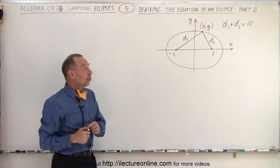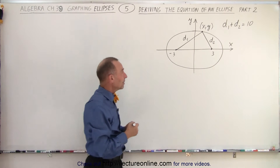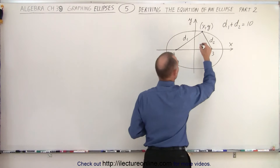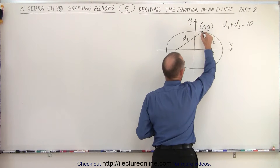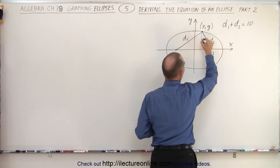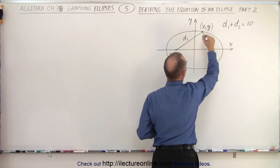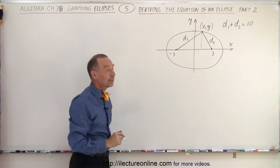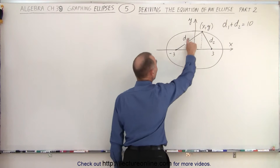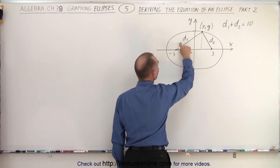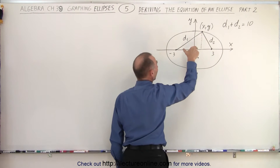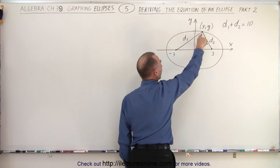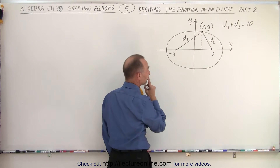We're going to use the distance formula to do that. And in order to use that effectively, let's draw a perpendicular line there. Now we can see that d1 is going to be equal to the square root of the sum of the squares of the two sides of the triangle.